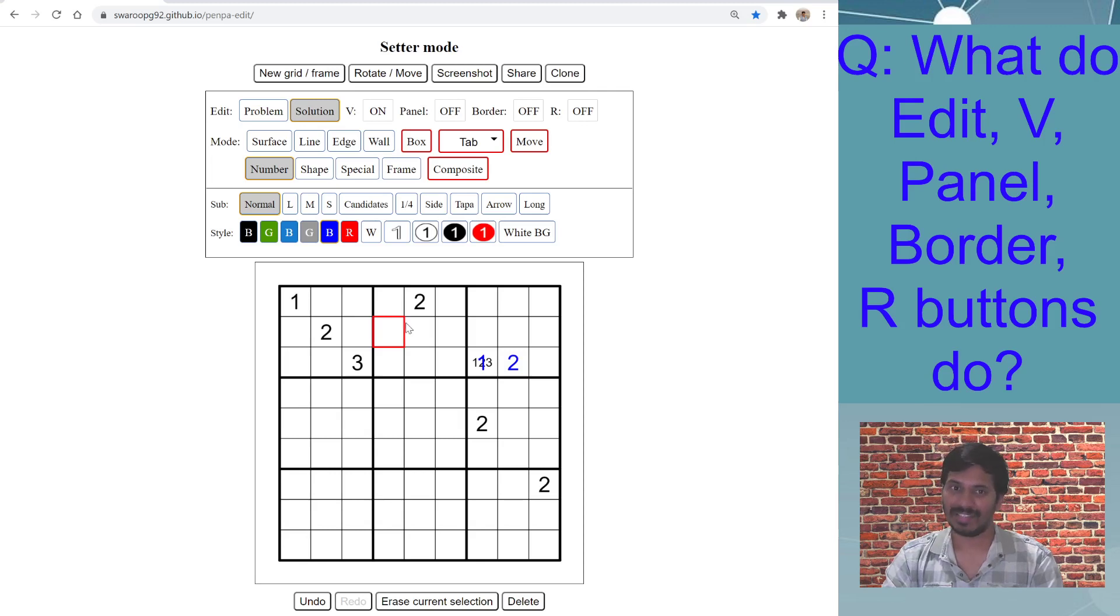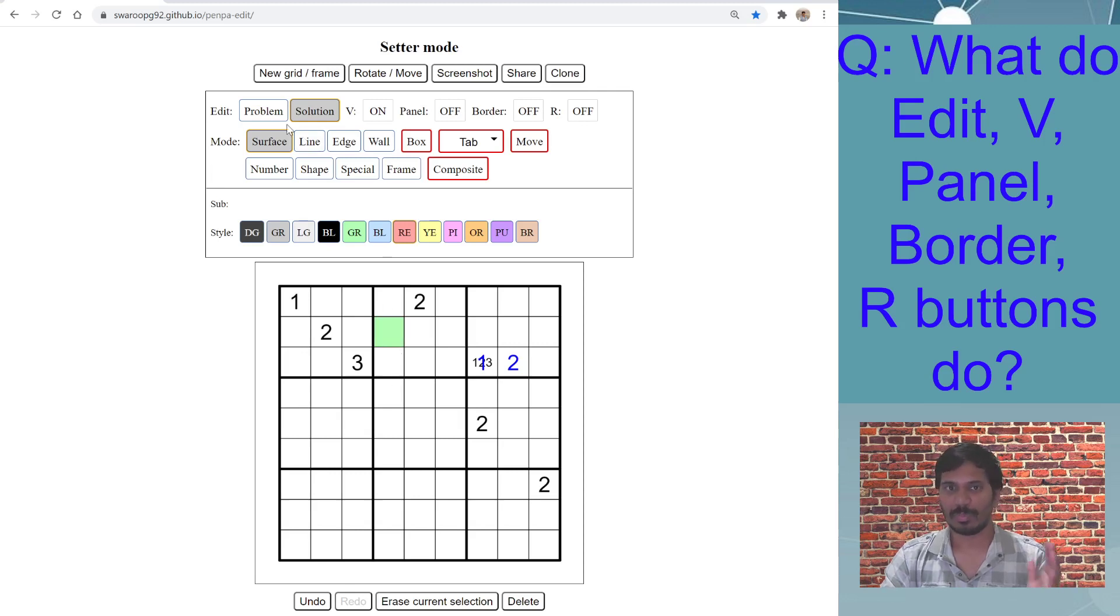Anything you enter or draw—enter shapes, draw lines, put numbers, shade some cells—in either of these modes, Problem or Solution, they are exclusive but it won't overwrite that information in the particular cell. Sure, it might hide it. For example, let's say if you do surface in the Problem mode, I do a green shaded cell. If I go to Solution and let's say do red, sure the red is now on top of green so you can't see it, but the green is still there.